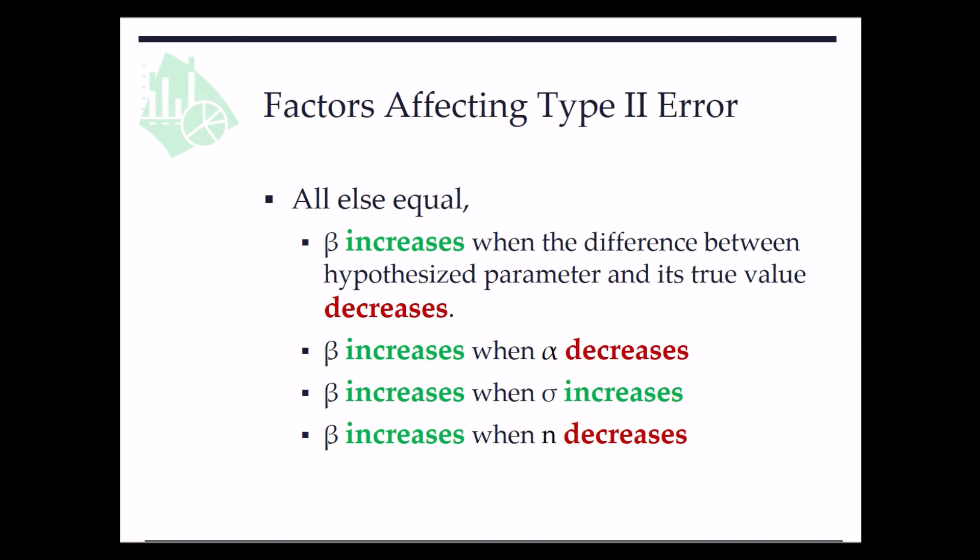Third, type 2 error chance beta increases when the population standard deviation sigma increases. Fourth, the type 2 error probability beta increases when the sample size n decreases.